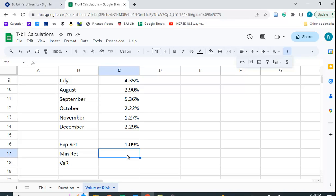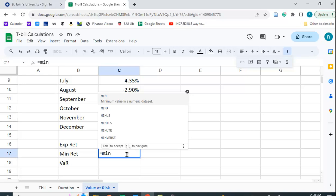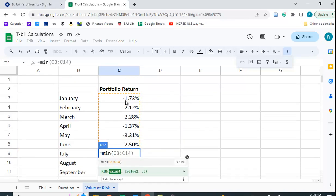But if you have a bigger data set, it might be harder to eyeball. So let's use the min function to find the minimum value. Let's highlight all of these.